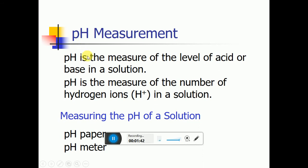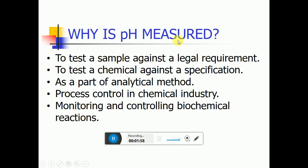pH measurement: pH is a measure of the level of acidity in a solution. pH is a measure of the number of hydrogen ions in solution. Why is pH measured? To test a chemical against legal requirements, to test a chemical against a specification, as part of an analytical determination, process control in chemical industry, and monitoring and controlling chemical reactions.